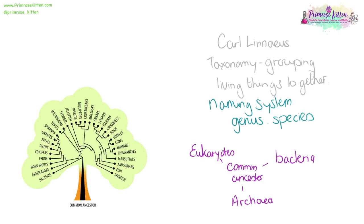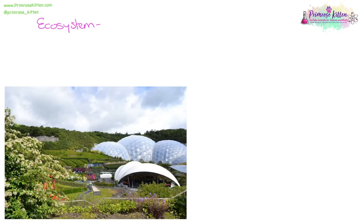The three domain system divides everything in life into three groups: eukaryotes, bacteria, and archaea. Eukaryotes are things that have nuclei. An ecosystem comprises the animals, plants, and everything living within a certain area.